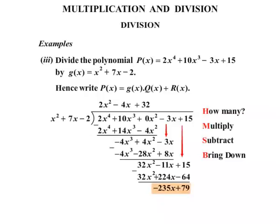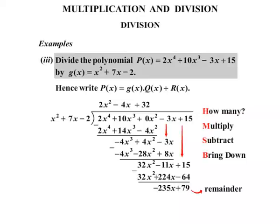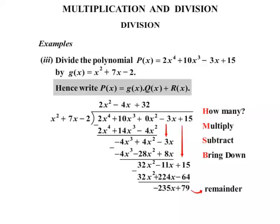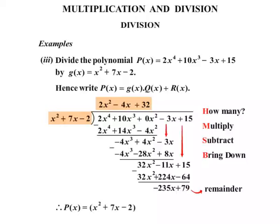This time there's nothing else to bring down, so rather than being zero, that is our remainder. The previous couple of questions had zero remainder, but this time we do have a remainder. So we've done that division. Hence write the polynomial as g of x times q of x plus r of x: P of x equals x squared plus 7x minus 2, which is g of x, multiplied by the quotient q of x which is 2x squared minus 4x plus 32, plus the remainder r of x which is minus 235x plus 79.